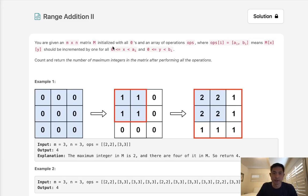You are given an m times n matrix initialized with all zeros and an array of operations, where ops i equals a comma b essentially means it should be incremented by 1 for all of 0 less or equal to x less than a.